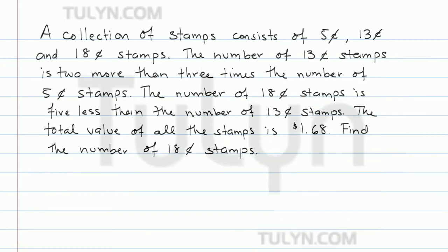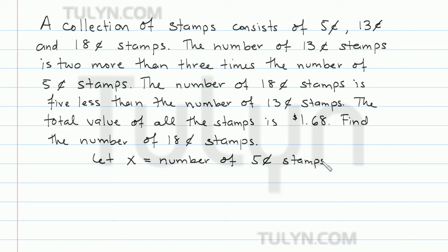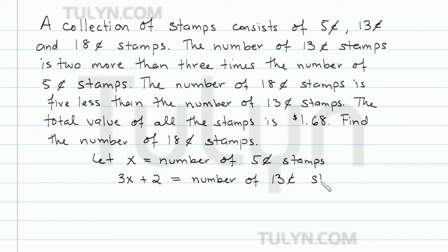Find the number of 18 cent stamps. The first thing we need to do is label our variables. We want to let x be the number of 5 cent stamps. Now notice that the number of 13 cent stamps can be written in terms of the number of 5 cent stamps — it's 2 more than 3 times the number of 5 cent stamps. So we can say that 3 times the number of 5 cent stamps plus 2 gives us the number of 13 cent stamps.